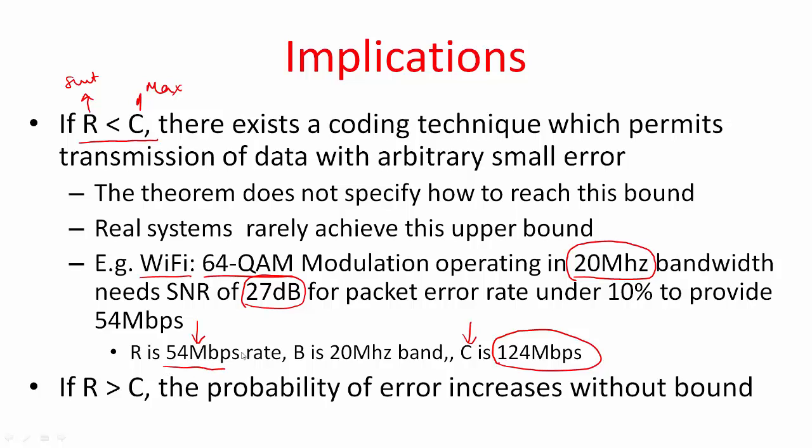So as you can see, real systems rarely achieve this upper bound, but the goal is to try to achieve this upper bound. That's where a lot of research happens. Now Shannon also specifies that if R were greater than C, in other words you have a maximum achievable rate, but if you were to send data that exceeds this rate, the probability of error increases without bound. What this means is you cannot recover the signal.